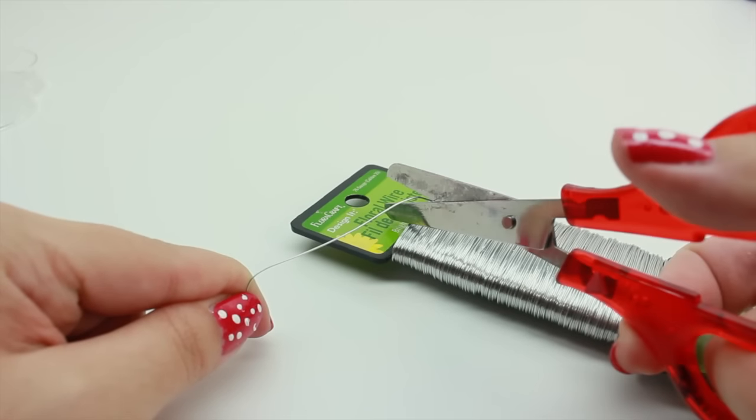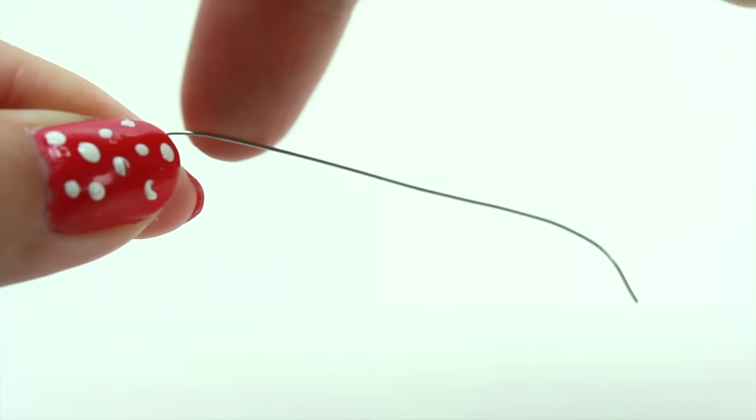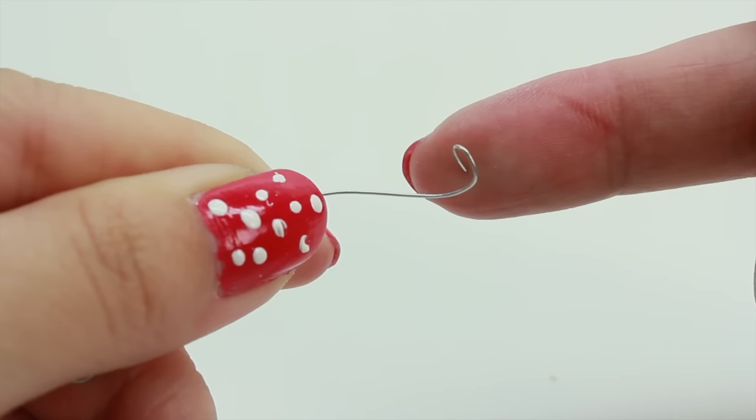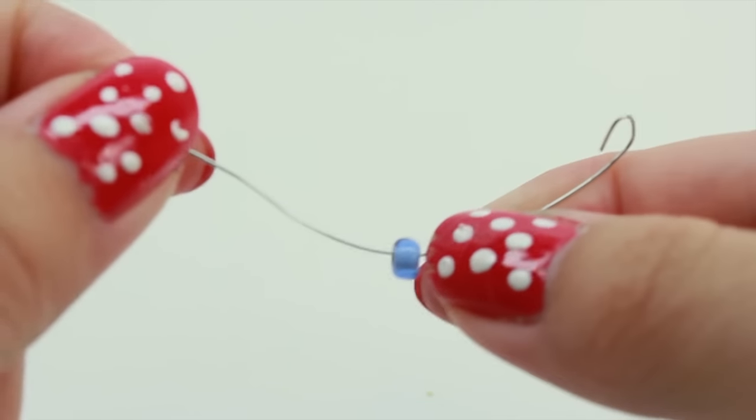The next thing you're going to do is cut out some wire, and it doesn't have to be too long. Take your tweezers and go ahead and bend the side to make a circle. And then string the beads onto your wire.